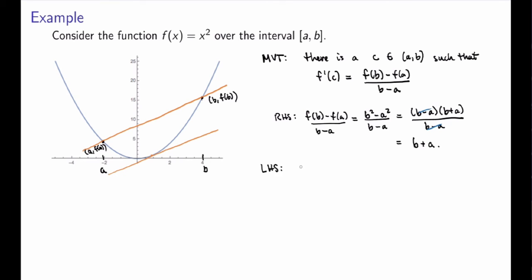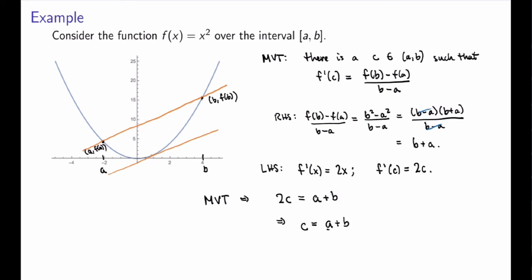For the left-hand side, the derivative of x² is 2x, so the derivative evaluated at c is 2c. The mean value theorem then becomes 2c = a + b, or c = (a + b) / 2. So the point c where the tangent line is parallel to the secant line is exactly halfway between a and b. This is a very special case due to how nice the x² function is — in general c may not be halfway, and there could be more than one c. But for x², for any a and any b, the midpoint always gives a tangent line parallel to the secant line.